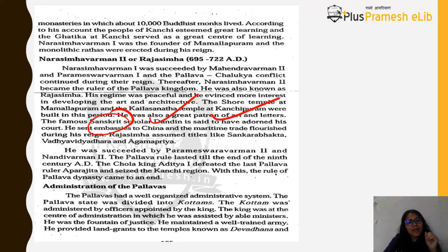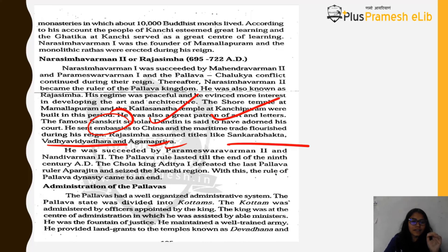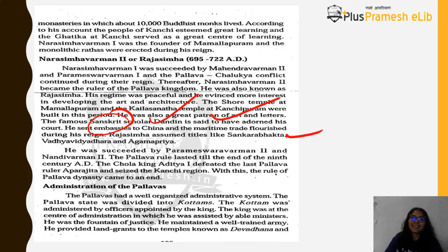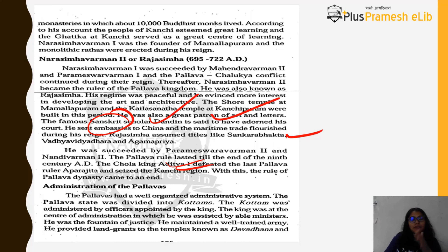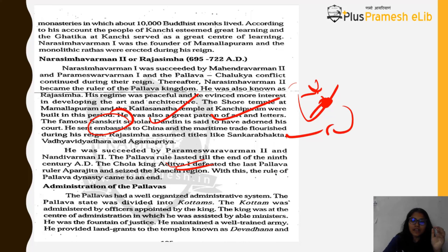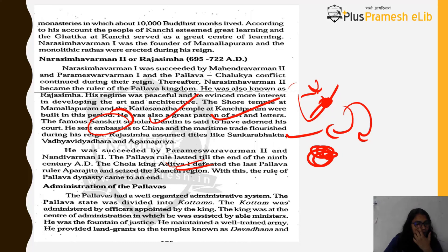Rajasimha assumed titles like Shankarabahkta, Vaidya Vidhara, and Agamapriya. He was succeeded by Paramesvara II and Nandi Varman II. Pallava rule lasted until the end of the 9th century AD. The Chola king Aditya I defeated the last Pallava ruler, Aparajita, and seized the Kanchi kingdom. With the fall of Kanchipuram — the capital — the rule of the Pallava dynasty came to an end.